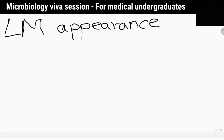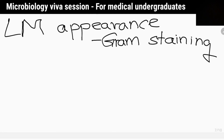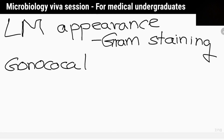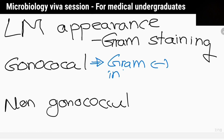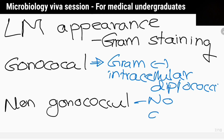How can you differentiate those two types of urethritis by light microscopic appearance? Gram staining of the specimen shows gram-negative intracellular diplococci in gonococcal urethritis, but these are absent in non-gonococcal urethritis.